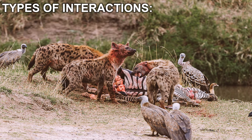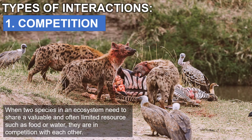The size of a real ecosystem is not defined in terms of area, but rather by the interactions that occur inside it. Within an ecosystem, the species living in a particular area can interact in different ways with each other. When two species in an ecosystem need to share a valuable and often limited resource such as food or water, they are in competition with each other. Hyenas and vultures are both scavengers and compete for the same food.